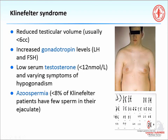The most common karyotype abnormality is Klinefelter syndrome, 47XXY — an extra X chromosome due to a meiotic defect. These men typically have small testes, elevated gonadotropin levels, low serum testosterone with varying symptoms of hypogonadism, and azoospermia — though less than 8% may have some fused sperm in the ejaculate. The Y chromosome microdeletion test should also be done in men with oligospermia or azoospermia due to testicular failure.